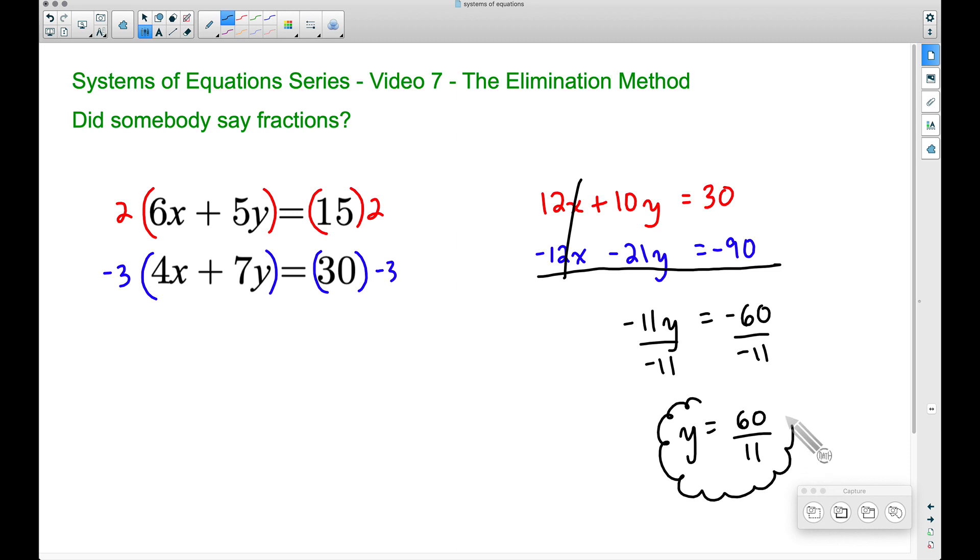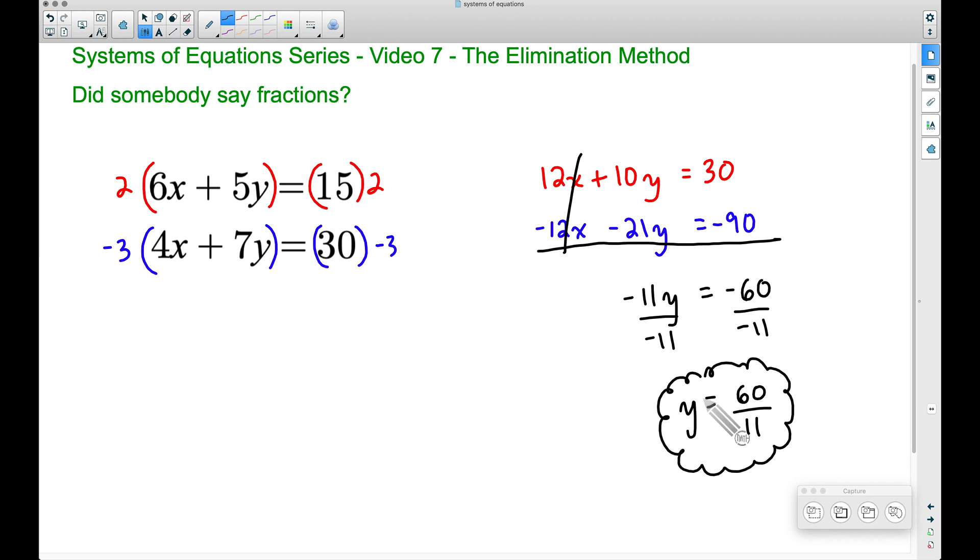So there's one of our answers, and notice now we do have some fractions popping up. So now let's take this 60 over 11, let's brush up on our pencil and paper skills of working with fractions, and let's find x. We got to find x. I'm going to pick this second equation here, you could have picked the first, but I like these numbers better. 4x plus 7, and then I'm going to plug in this 60 over 11 into that y, so that's times 60 over 11, and this is equal to 30.